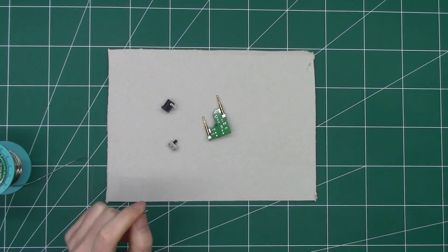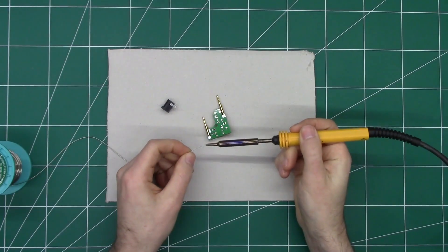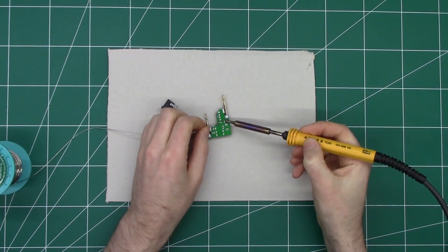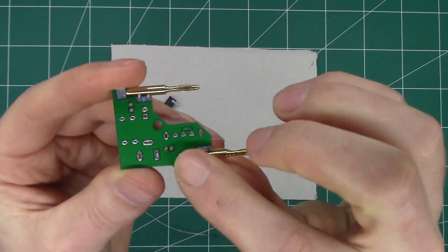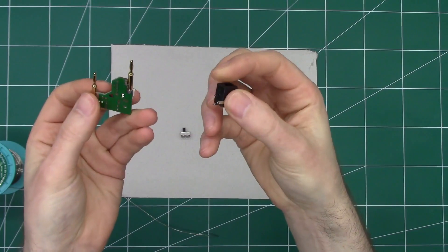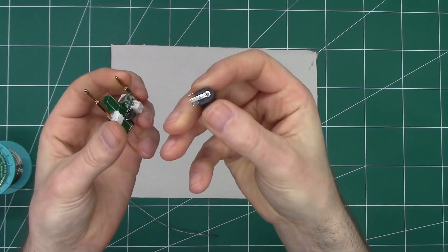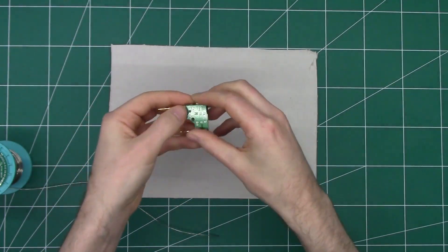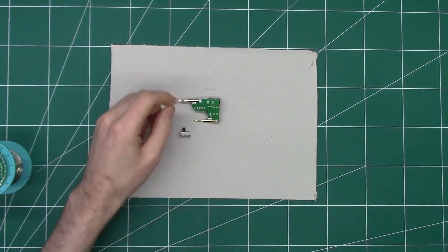There, I've soldered the two connectors on. I would then solder the DC barrel jack. It can slide in there and again this is only very basic soldering skills required.